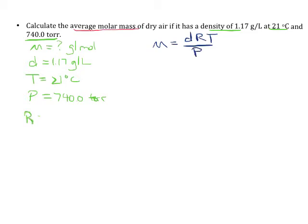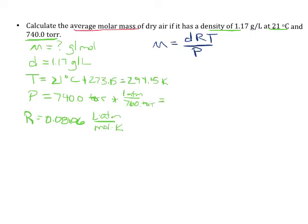Remembering that R is going to be in units of 0.08206 liter atmosphere per mole Kelvin. We're going to need to do a quick couple unit conversions. Temperature, we're going to add 273.15 to get that into Kelvin. So we'll have a temperature that's actually equal to 294.15 Kelvin. That pressure, we're going to convert to atmospheres using the conversion factor that one atmosphere is 760 torr.